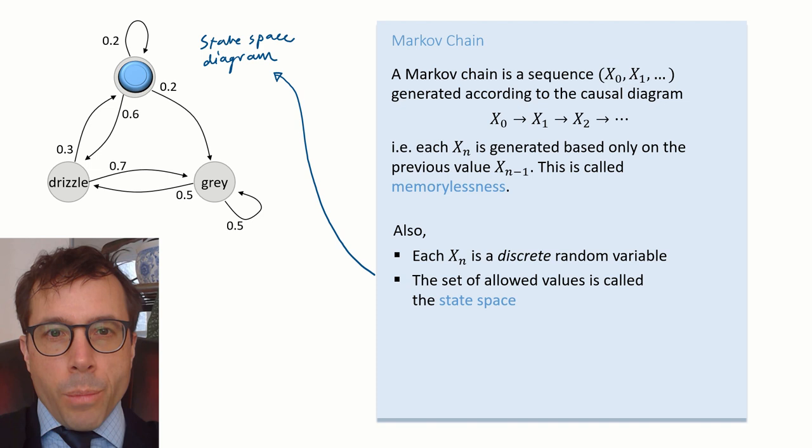In my Cambridge weather simulator, the state space is a set of three elements: rain, drizzle and grey. This diagram I've drawn here is called the state space diagram.